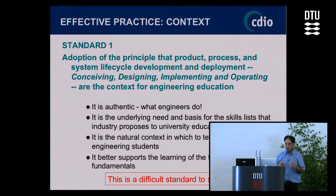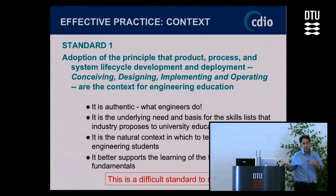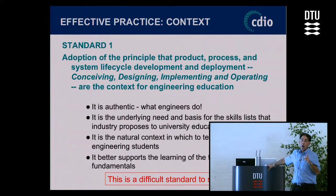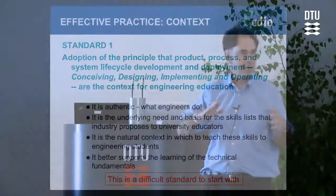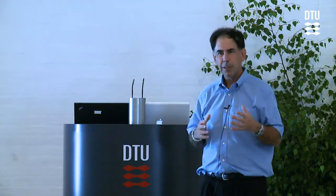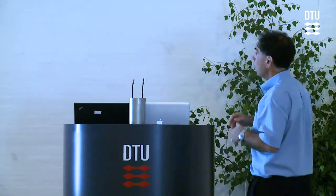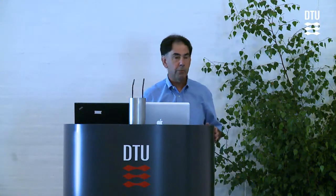Standard one says adopt the principle that product-process-system building — CDIO — is the context for engineering education. This is actually numerically number one, but I found it a hard one to start with because there's a lot of subtlety: what does context mean, what does authentic mean, what does conceiving, designing, implementing, and operating mean? It's one of the more integrative and difficult standards. So today I'm going to skip over this one and go to standard two, which is much more concrete.